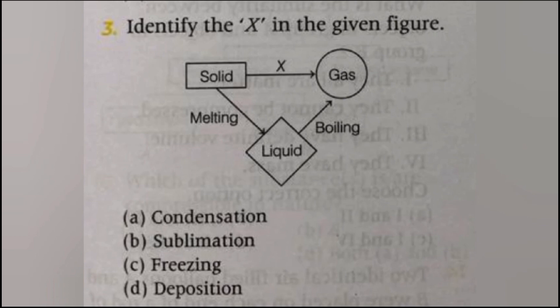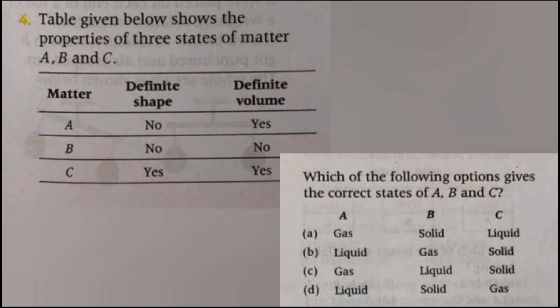Identify X in the given diagram. The answer is B, sublimation. X represents sublimation, which is the process of direct conversion of solid into gas.